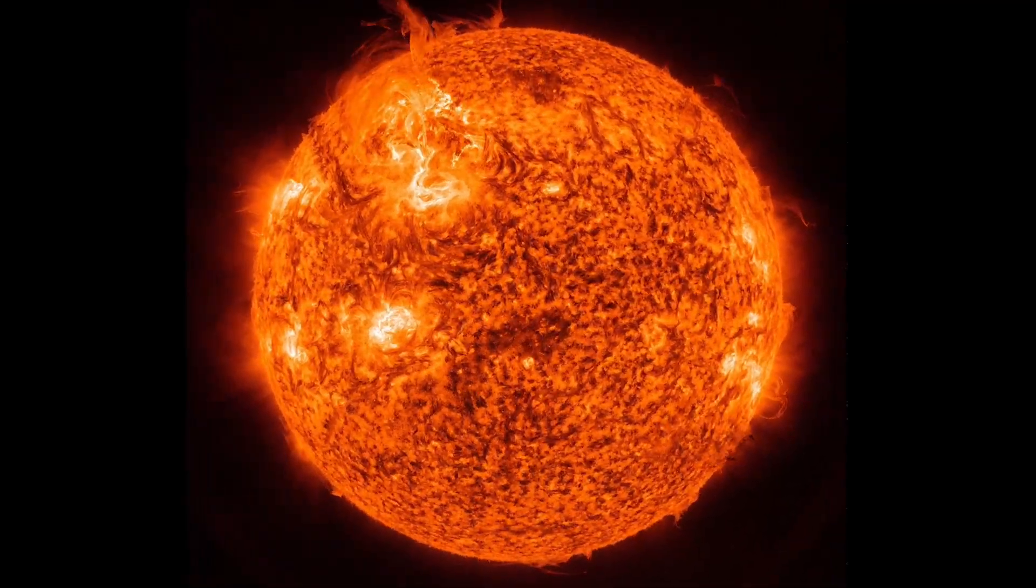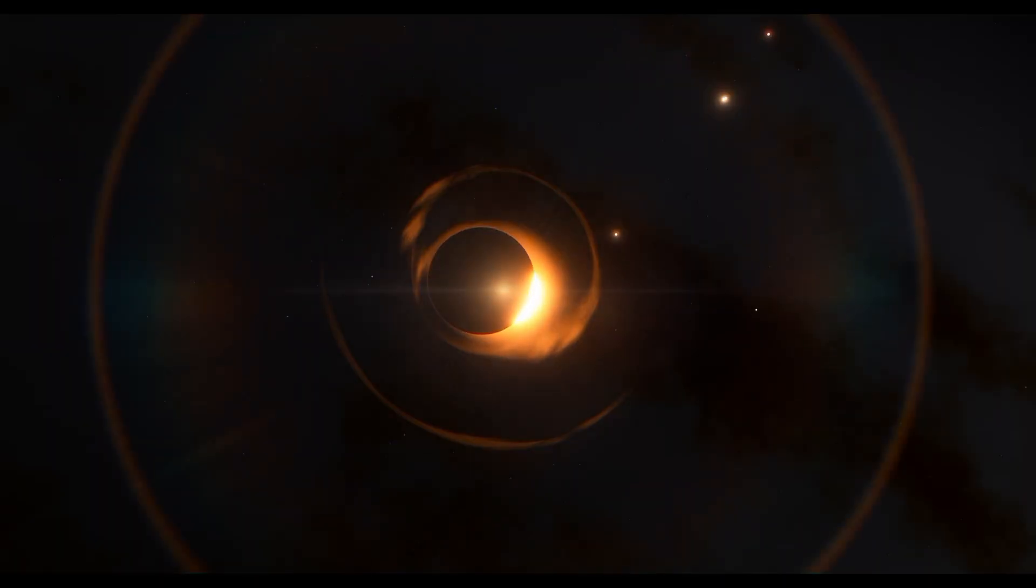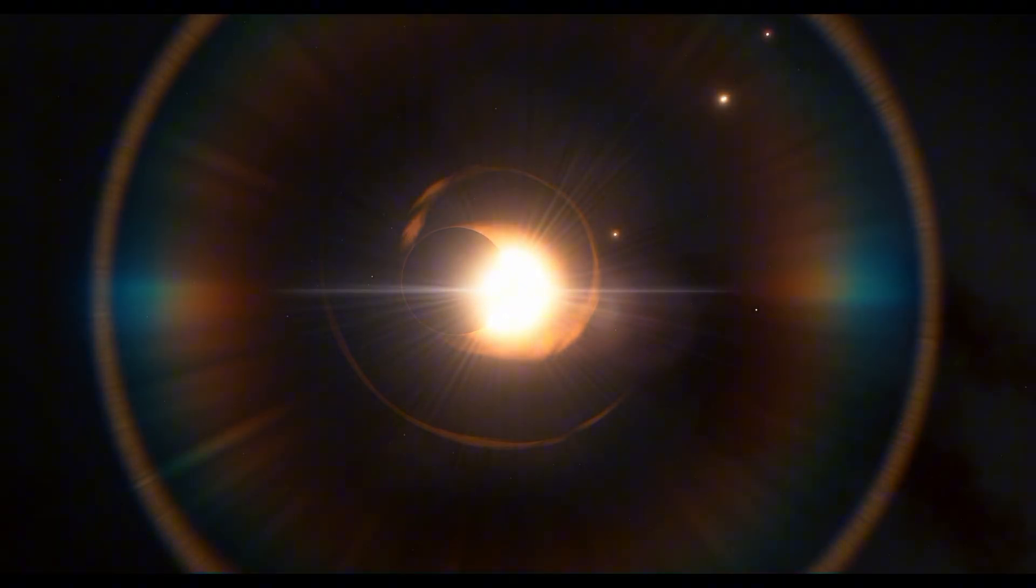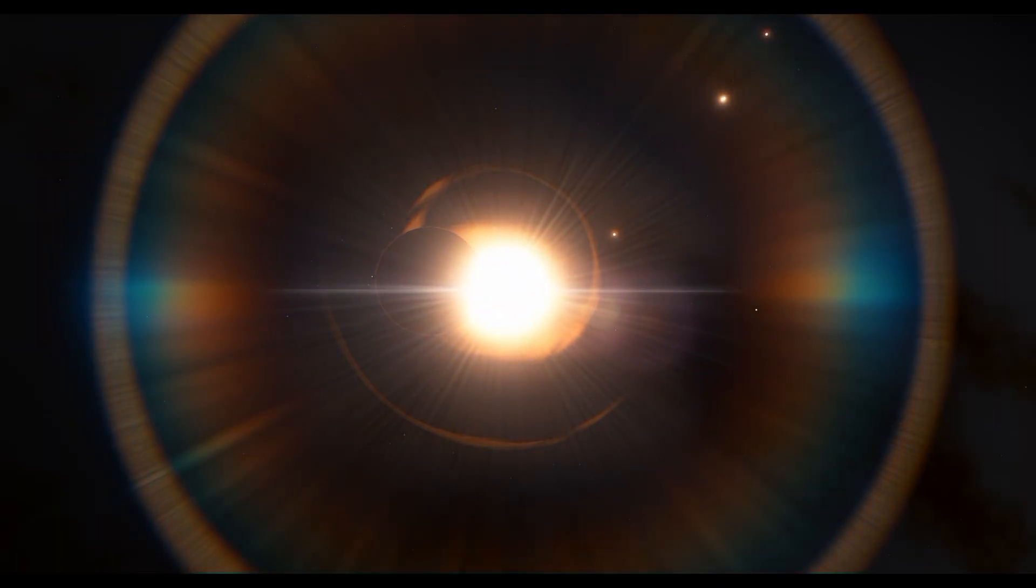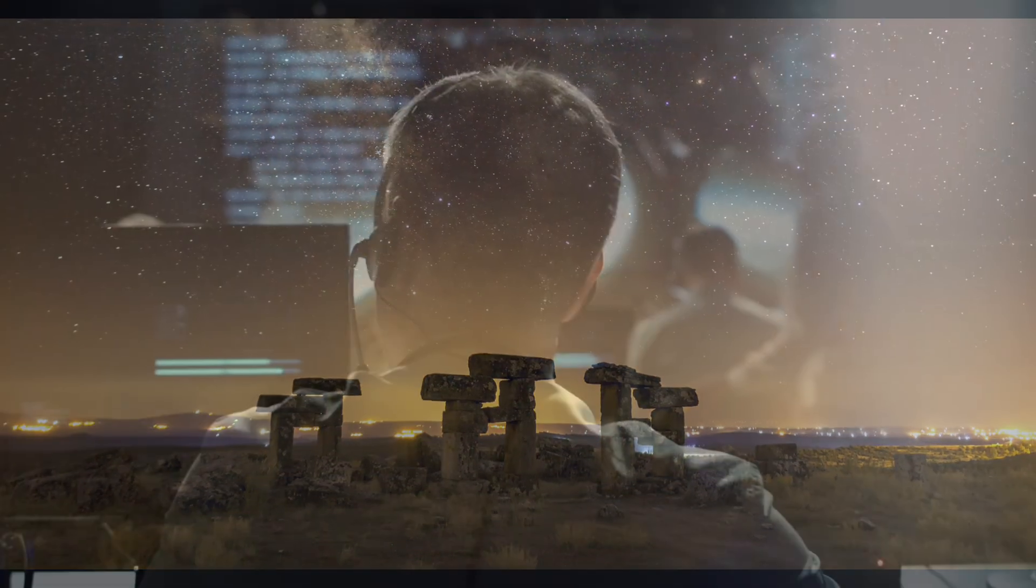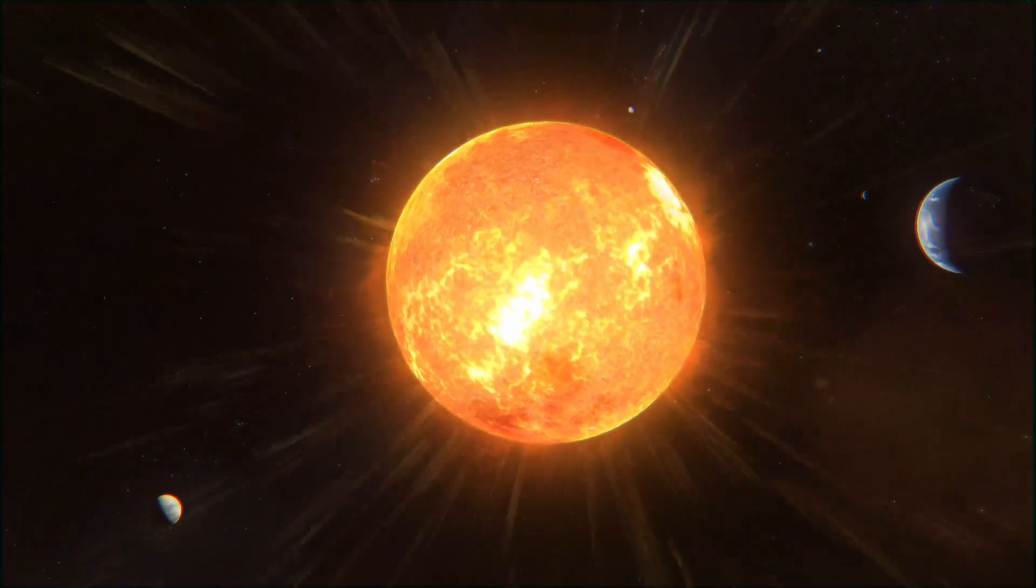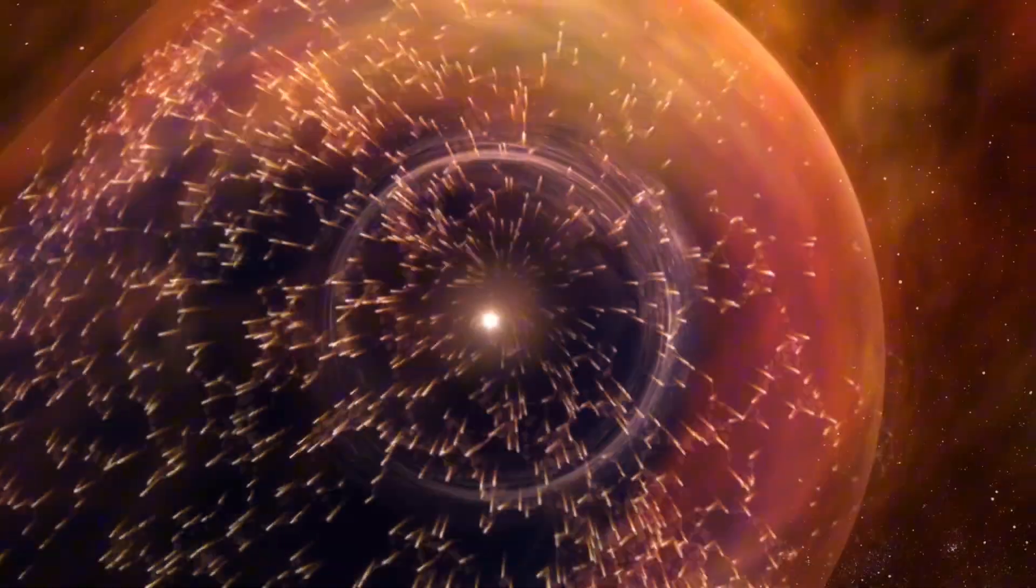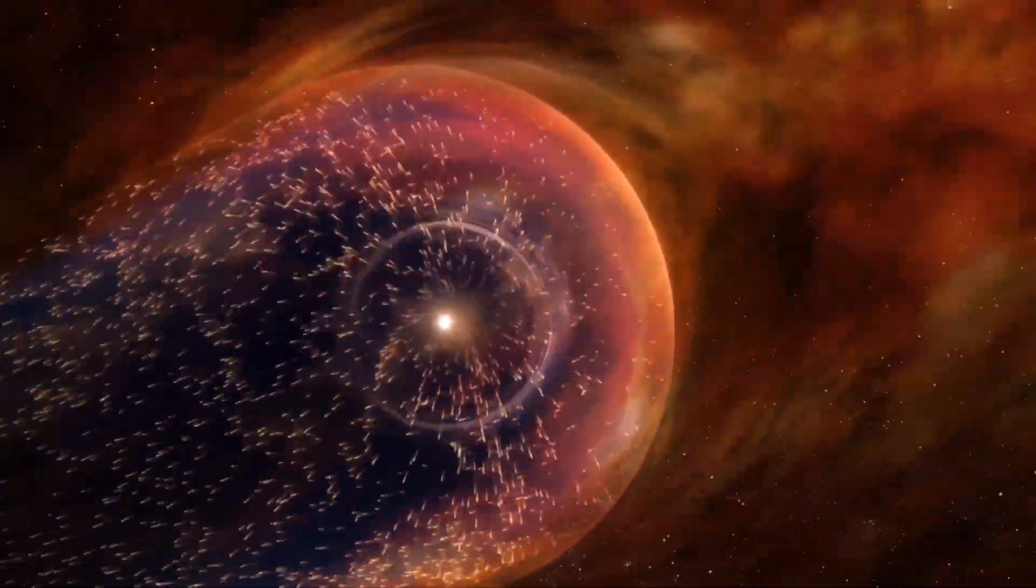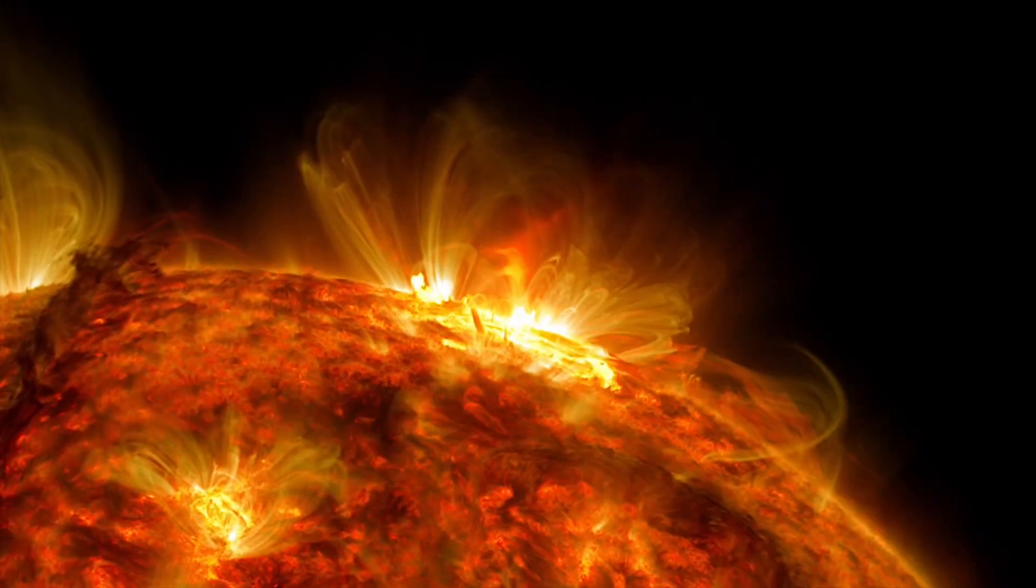This morning at 1:50 UTC, something happened on the Sun's surface that changed everything. After more than a week of unusual silence, our star erupted with a force we haven't seen in months. The blast triggered radio blackouts across the Pacific. But here's what has solar physicists concerned. This wasn't just any flare. It came from a region that shouldn't even exist yet, and what's rotating into view in the next 48 hours could make this look like a warm-up.